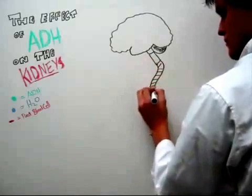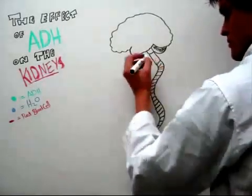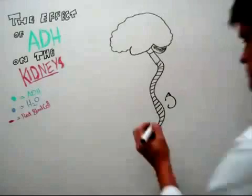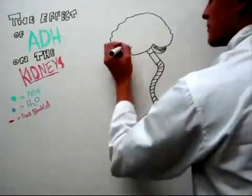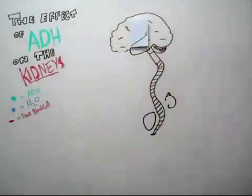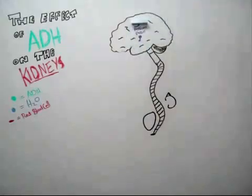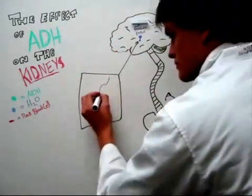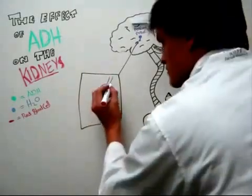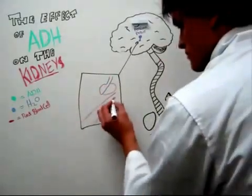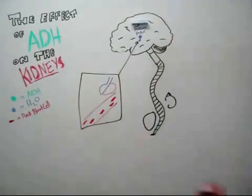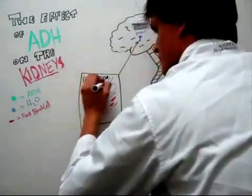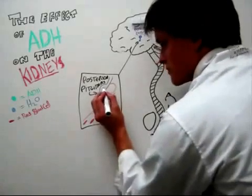As pictured here, we have the brain and the spinal cord. We have the kidney, and we also have the bladder. Now, in the brain, underneath this segment here, we have the posterior pituitary gland, as pictured in this image in the front rather than the back, just so we can see it properly. The posterior pituitary gland is an extension of the neurohypophysis, which is actually a part of the hypothalamus.